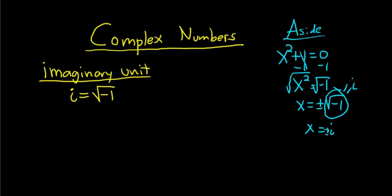Someone decided one day that this is something we need in order to solve the equation x squared plus 1 equals 0. So they made up the solution to this equation. Then hundreds of years later, other smart people — like engineers — came up with uses for it. Complex numbers are used a lot in physics and engineering.